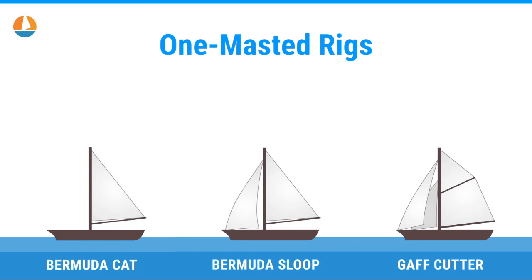Let's kick off with the one-masted rigs. There are roughly only three boat types here: the cat, the sloop, and the cutter. It's just a matter of how many sails are on the single mast. With one sail, it's always a cat. With two sails, it's always a sloop. With three or more sails, it's always a cutter. Then there's the additional descriptor — Bermuda or gaff — which is just the shape of the mainsail, the way it's set up on the mast. Is the mainsail triangular? It's Bermuda. Only one sail? It's a cat. Triangular mainsail with two sails? It's a Bermuda sloop. That's how you define the rig type of a boat.